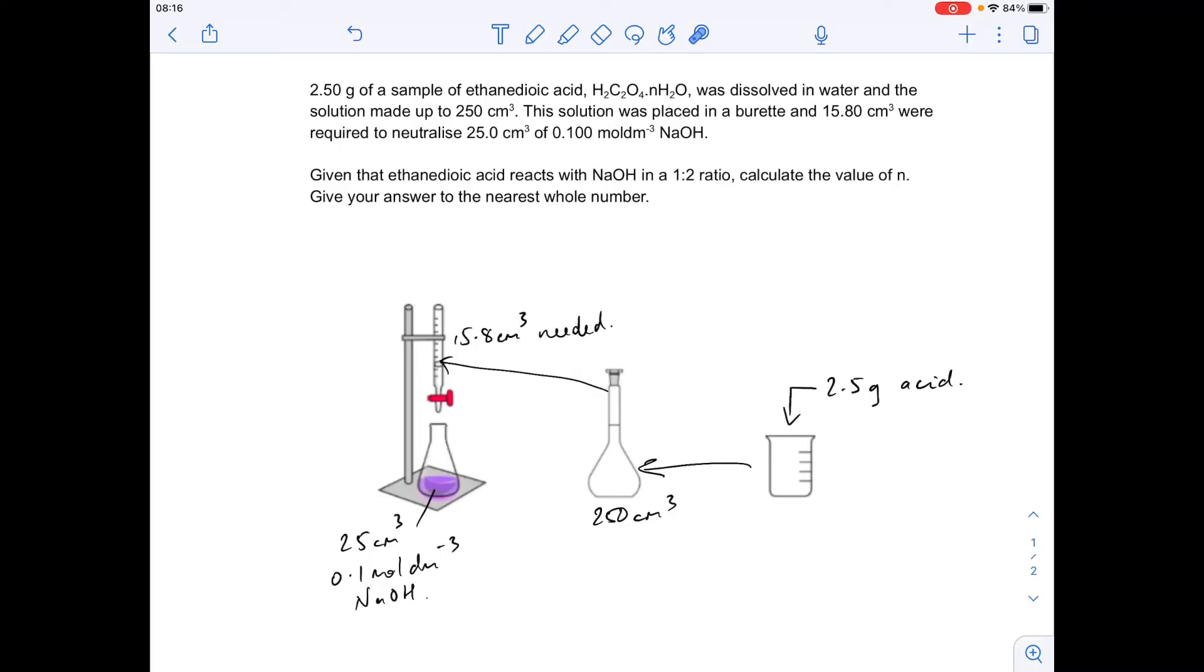So ultimately, to calculate the value of N, we want to know the MR of this acid, and then all we're going to do is take away the bit we do know, so this bit here, and then the remaining mass is down to the water, and then we can work out how many waters must be making up that part of the mass.